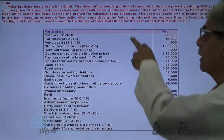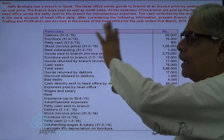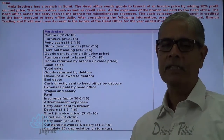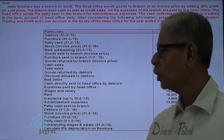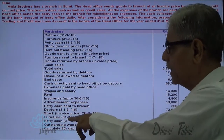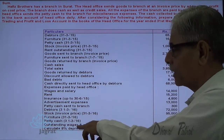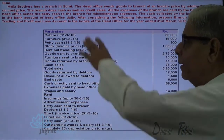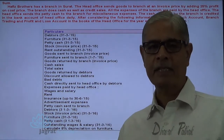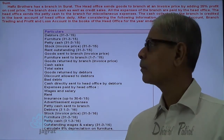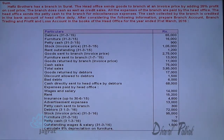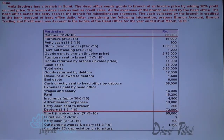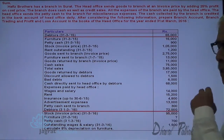The dates 31-3-2015 and 31-3-2016 are given — these are the opening balances. For 31-3-2016, furniture figures are the closing balances. The opening balance of debtors is given, and the closing balance of debtors is also given.